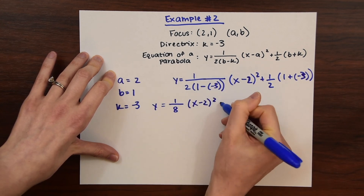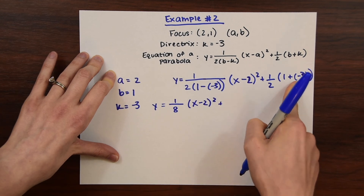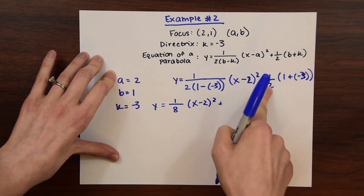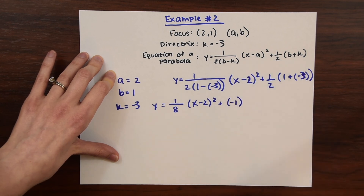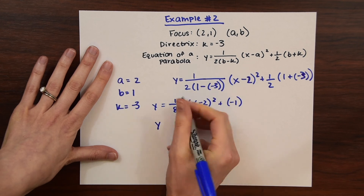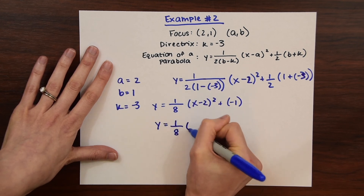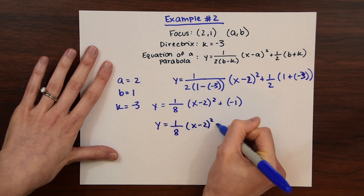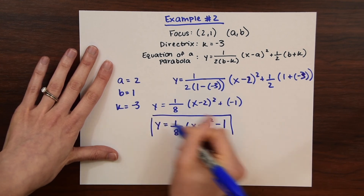Simplifying: 1 plus 3 is 4 times 2 is 8, so we get 1 over 8. For the constant term, negative 3 plus 1 is negative 2, divided by 2 gives us negative 1. So the equation of our parabola is y equals one eighth times (x minus 2) squared minus 1.